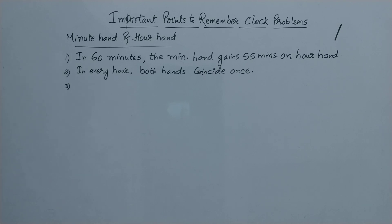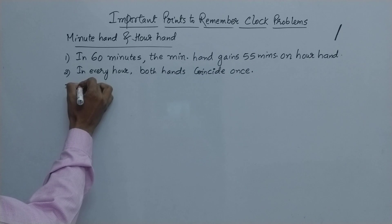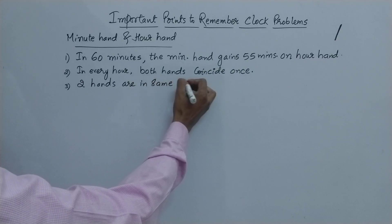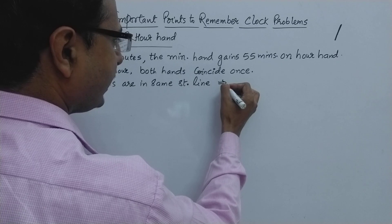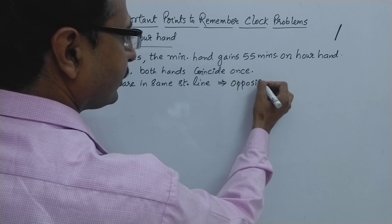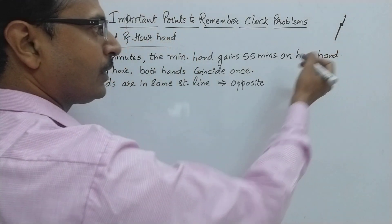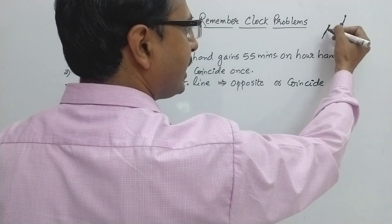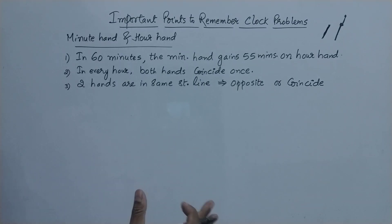The third point: the two hands are in the same straight line. When do we call them in a straight line? That means either they are opposite — if this is the minute hand then exactly opposite is the other hand, forming a straight line — or they coincide, where one hand is just underneath the other. So two hands are in the same straight line when either they are opposite or they coincide.